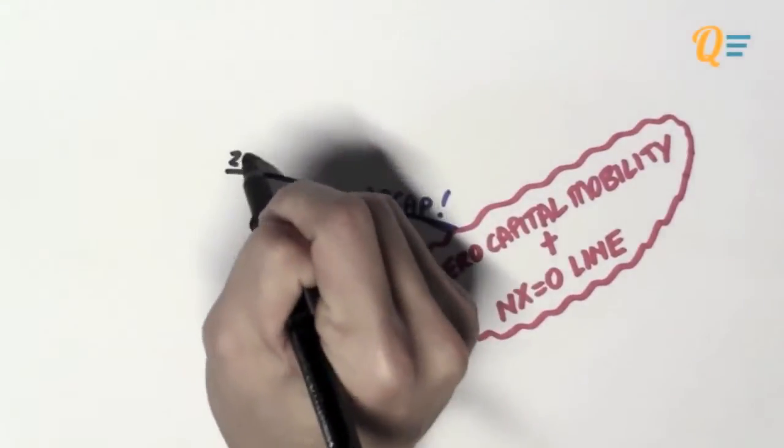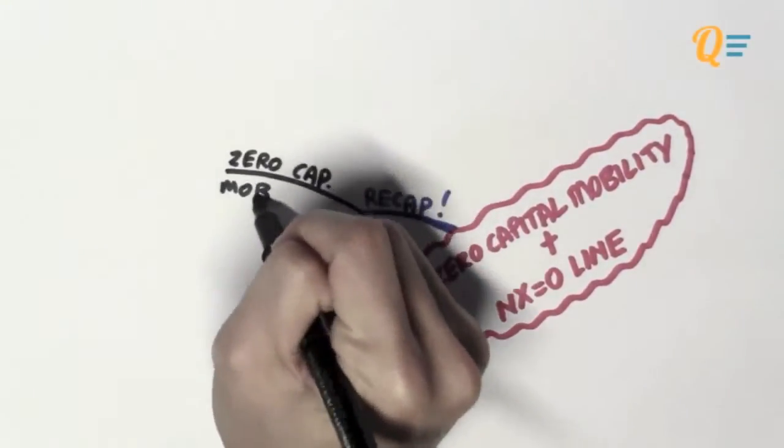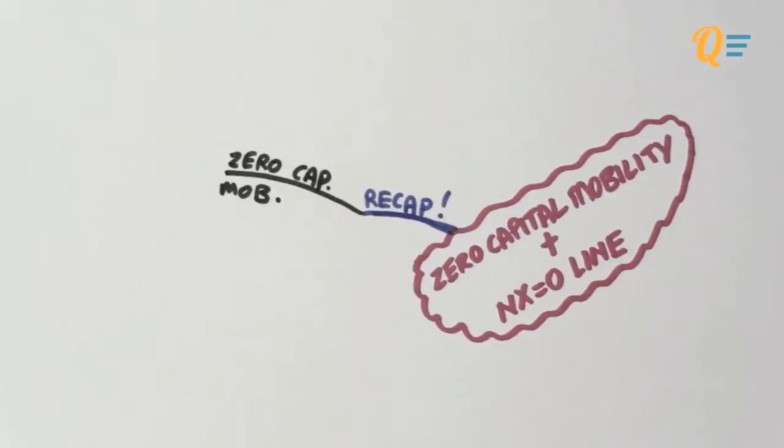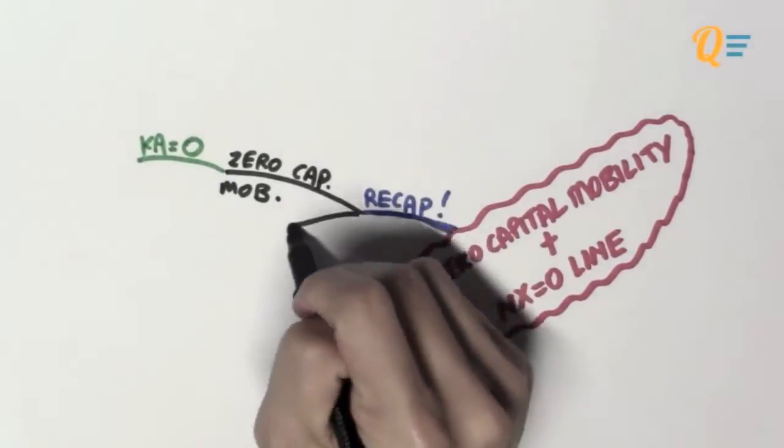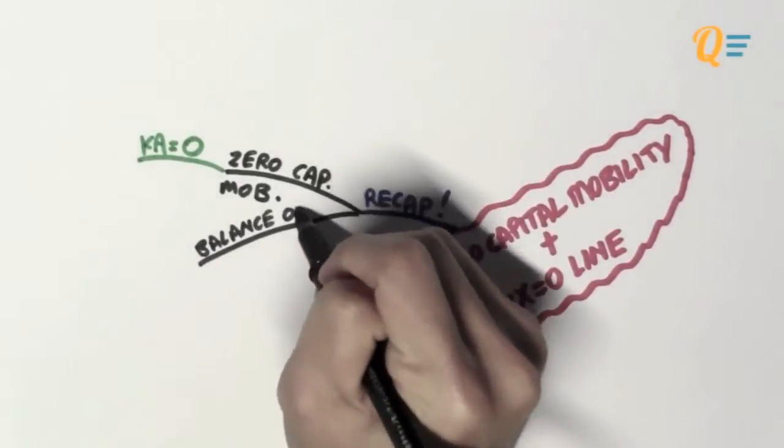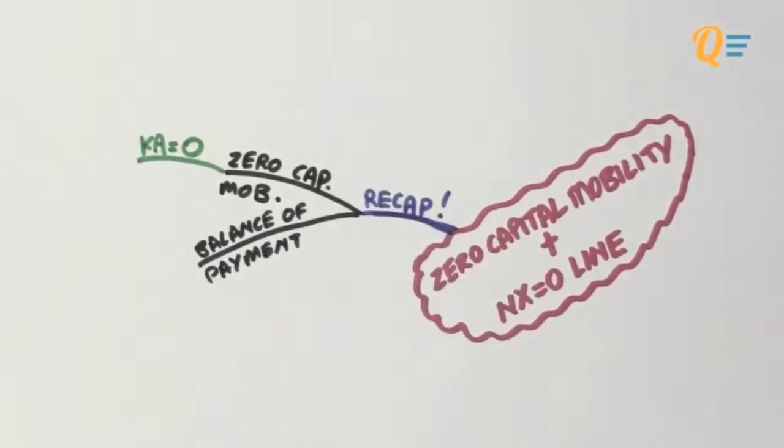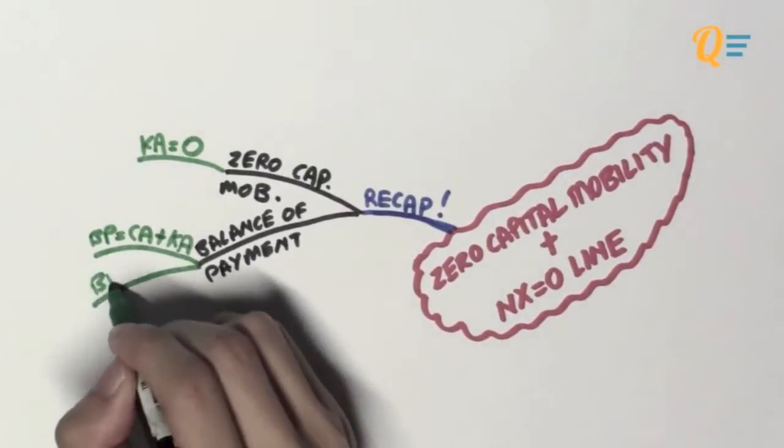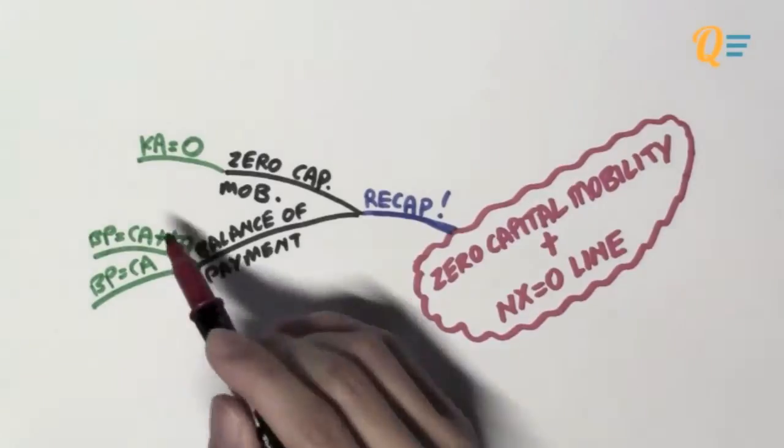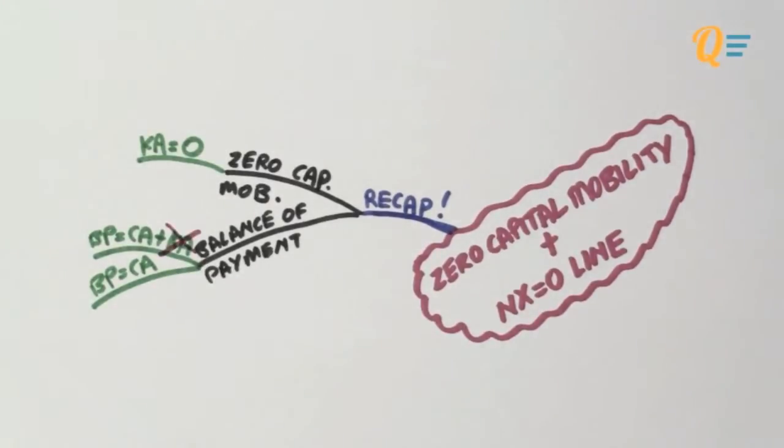So zero capital mobility basically means that there will be no funds that will be able to cross national borders to seek a high return and that means the capital account is going to be zero. That's because there's no funds in, there's no funds out, there's nothing to account for. So the balance of payment which is originally made up of the current account and the capital account is now only made up of the current account.